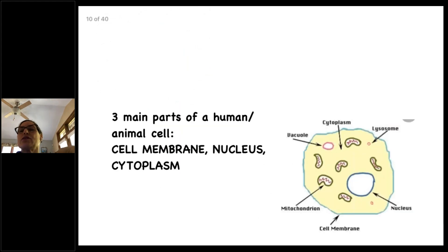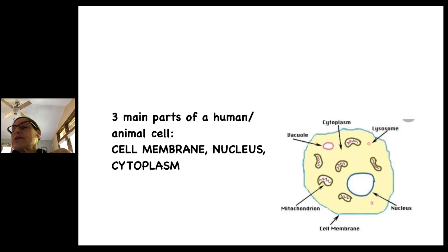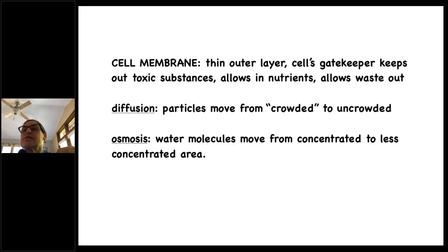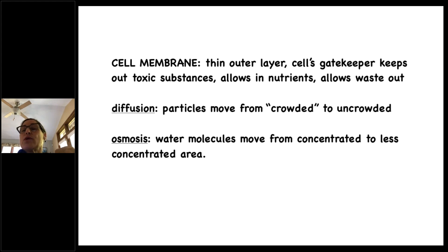The three main parts of a human or animal cell are the cell membrane — that aqua line containing the cell — the nucleus (the white part), and cytoplasm (the yellow part in this diagram), which is all the gel inside the cell. The cell membrane functions as the cell's gatekeeper: it's a thin outer layer that keeps out toxic substances, allows in nutrients, and allows waste out. It works through diffusion, where particles move from crowded to uncrowded areas.